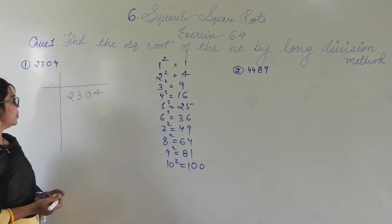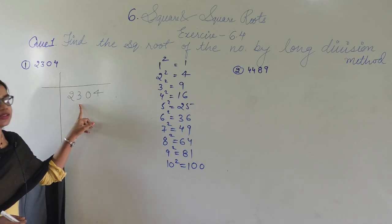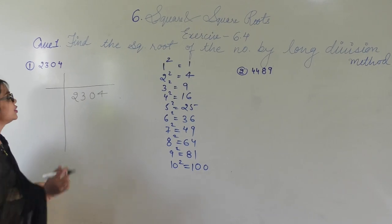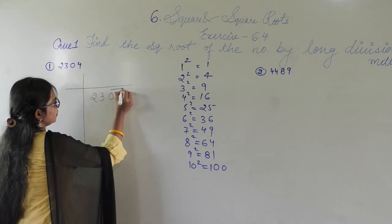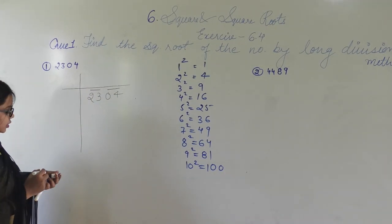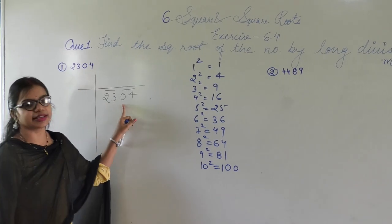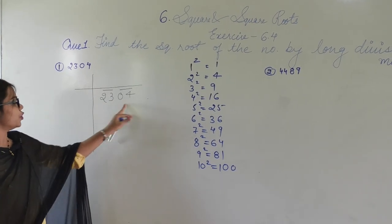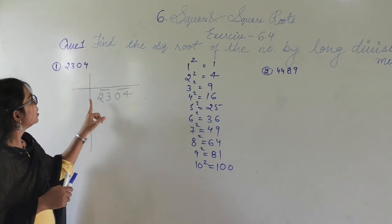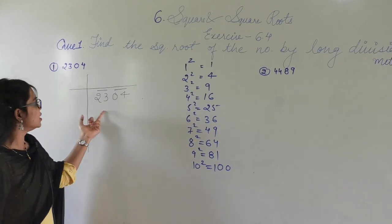I have written the number 2304 in the long division format. The first step in this method is to make pairs starting from the right. Here I get one pair and another pair. The first pair is 23 and the second pair is 04. In this long division method, you have to take a number whose square is equal to or less than 23.